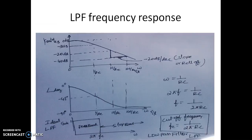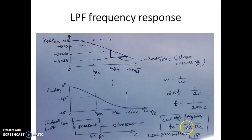We also observed the frequency variation of the gain with respect to frequency. We obtained an expression for the cutoff frequency: FC = 1 over (2π RC). Taking R as 1kΩ and C as 0.1 microfarad, FC works out to be 1.59 kHz. So let us try to do the simulation using LTSPICE.